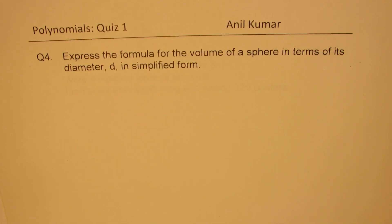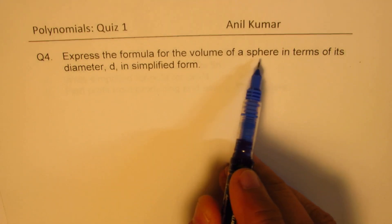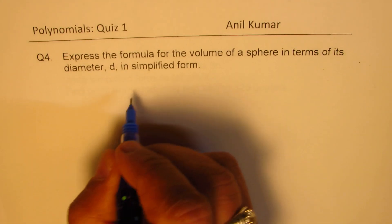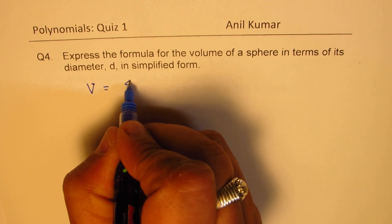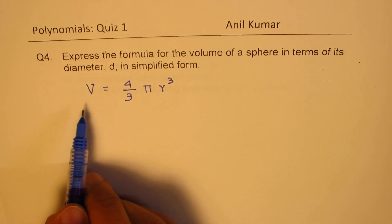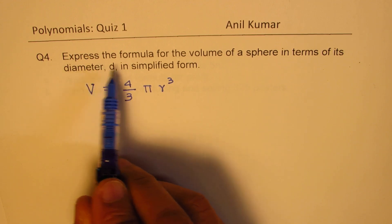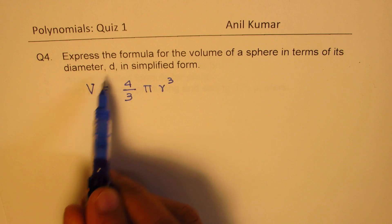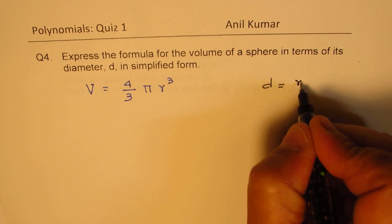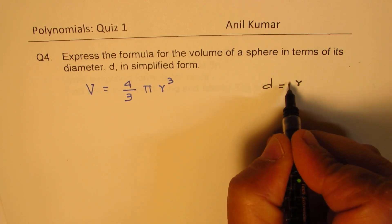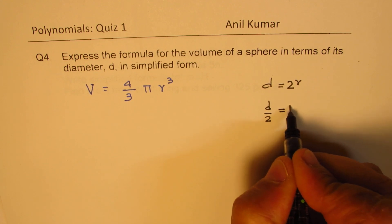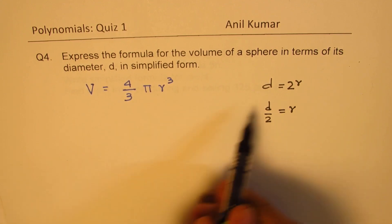Next is question number 4: express the formula for the volume of a sphere in terms of its diameter d in simplified form. Normally, the formula will be given to you: volume of sphere is (4/3)πr³, where r is the radius. The question asks us to express it in terms of diameter. Diameter d equals 2r, so half of the diameter is the radius r. We'll substitute r with d/2.